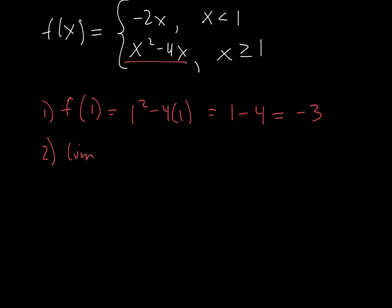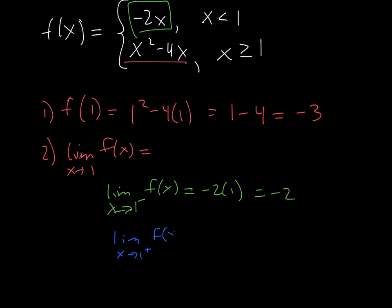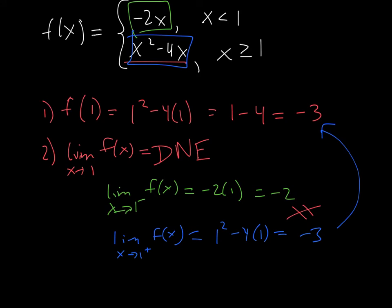Second part, limit as x approaches 1 of my function has to be equal to some value, subcase for this, so I've got to look at the left-hand side. So the limit as x approaches 1 from the left of my function is negative 2 times 1, which is negative 2. And now my other subcase is I've got to look at the limit as x approaches 1 from the right of my function, and that's using this function, so that's equal to 1 squared minus 4 times 1, so a negative 3. So at this point, my conclusion is the limit does not exist, since negative 2 does not equal negative 3, my left-hand limit is not equal to the right-hand limit.